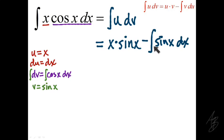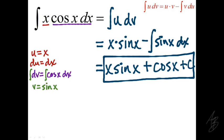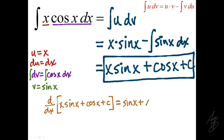This looks a bit more complex than what we started with, but notice that the x is gone and we know how to integrate sine of x. The integral of sine of x is negative cosine of x, so we get x times sine of x plus cosine of x plus C. To confirm, we take the derivative using the product rule: we get sine of x plus x cosine of x minus sine of x, which simplifies to x cosine of x — exactly where we started.